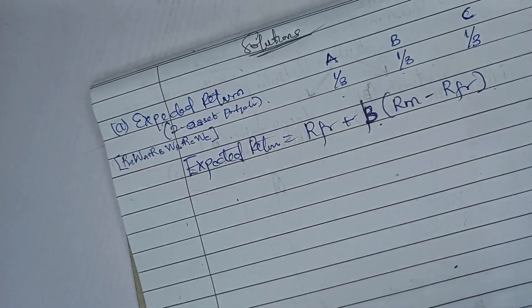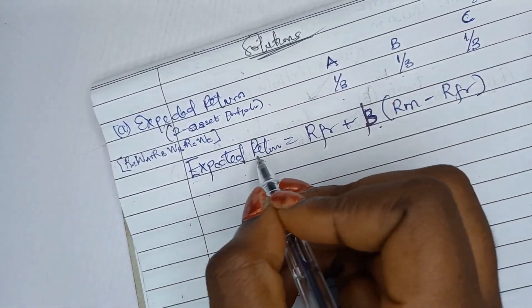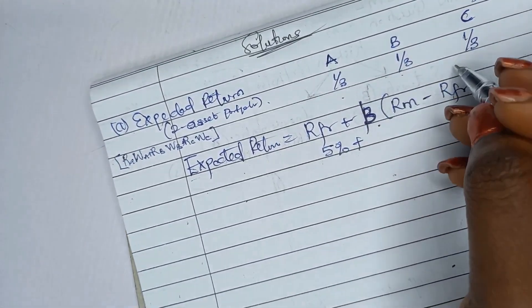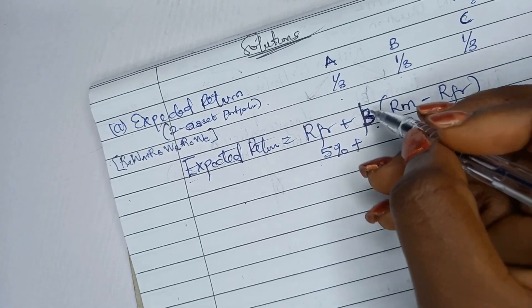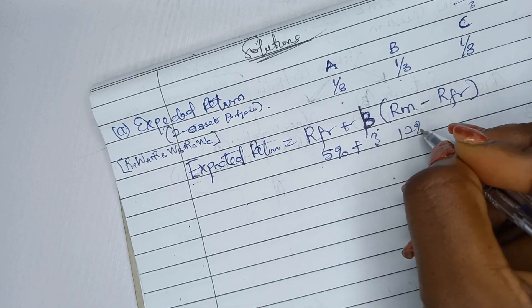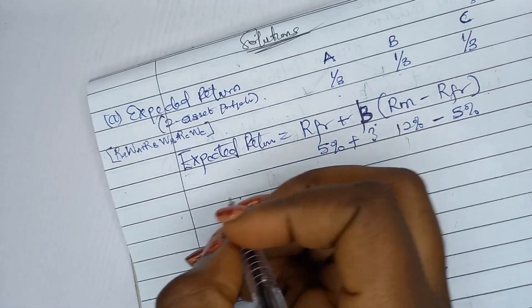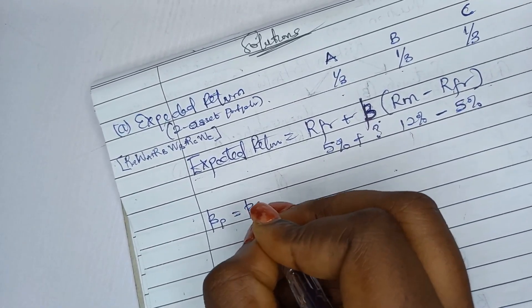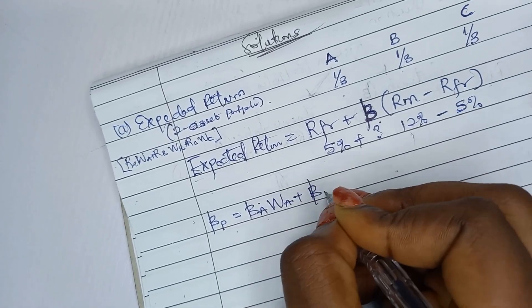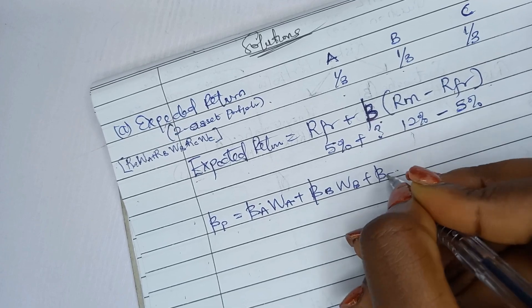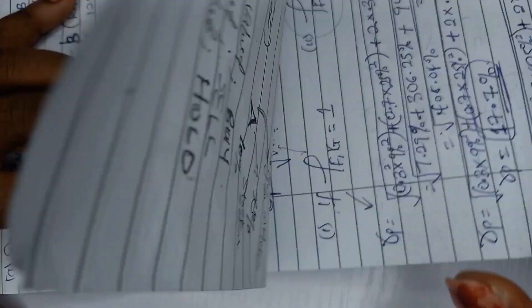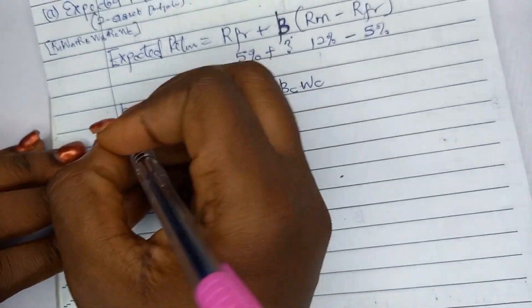However, whenever you see beta (systematic risk) in a portfolio question and you're asked to calculate expected return, use the CAPM formula with the portfolio beta. So let's first solve for the portfolio beta. With the risk-free rate at 5%, market return at 12%, we need the average portfolio beta: beta of A times weight of A, plus beta of B times weight of B, plus beta of C times weight of C.